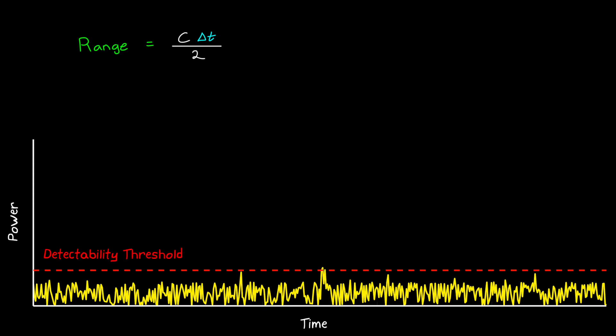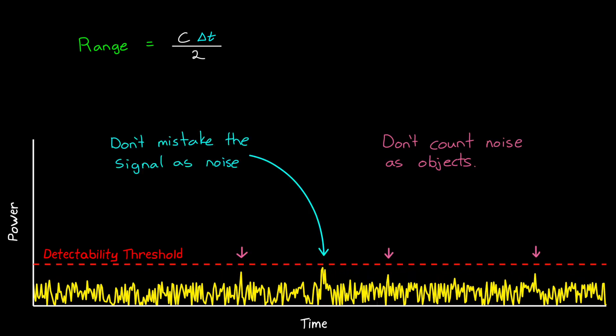We set this detectability threshold such that the probability of a false detection is low enough to not constantly claim random noise spikes as objects, and not so high as to miss the signal completely.